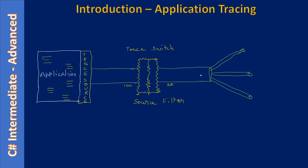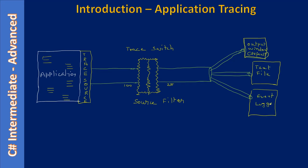From the trace switch we can attach different listeners. There are multiple listeners: the debug output window is the default, and next we can have a text file, event logger, console output window, XML file — many listeners are available. Messages coming out of the trace source through the trace switch flow to the listeners, with some messages filtered out and few reaching each listener.